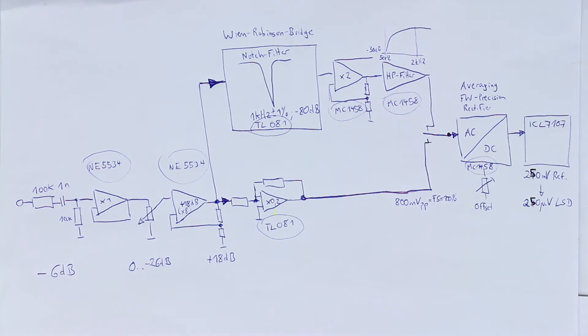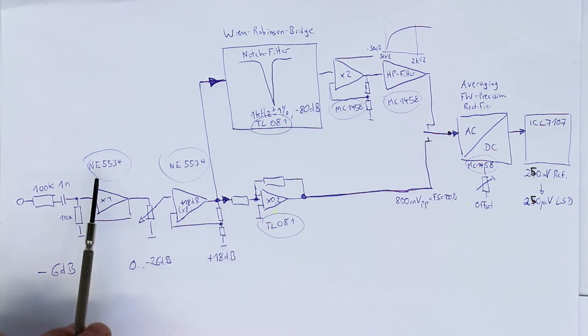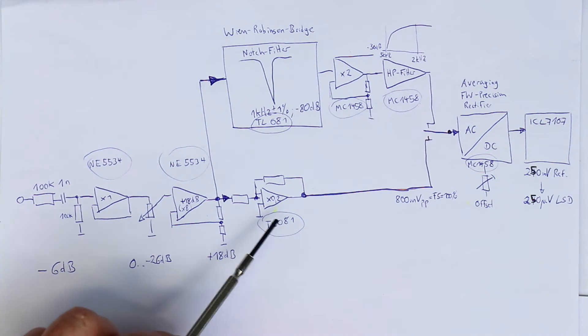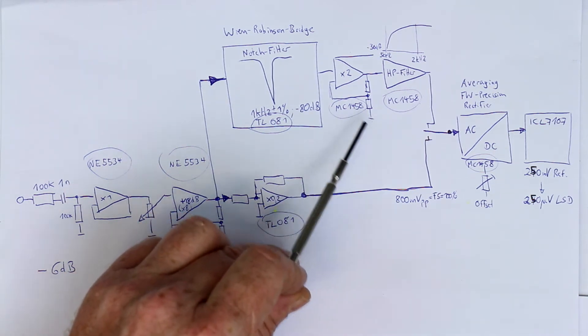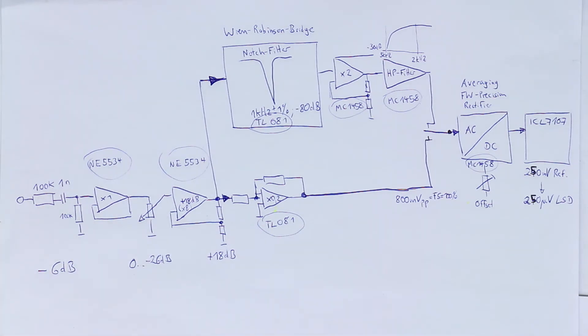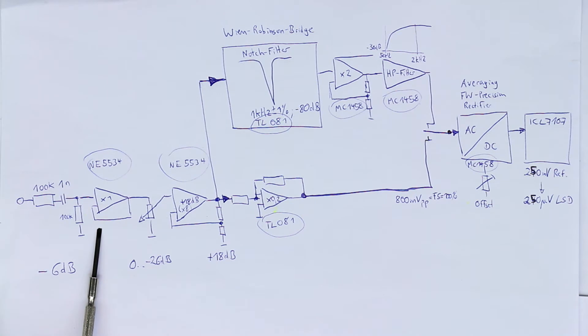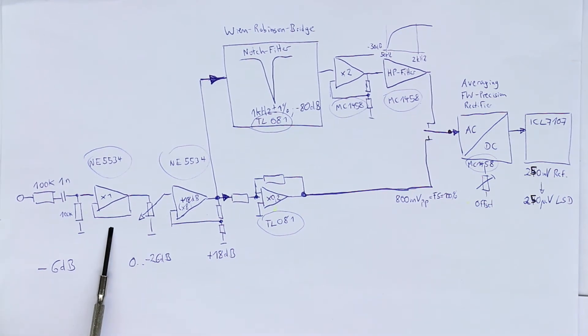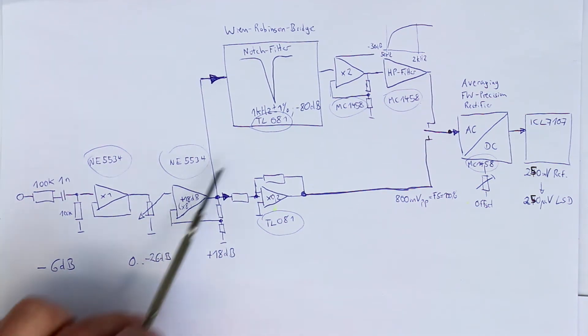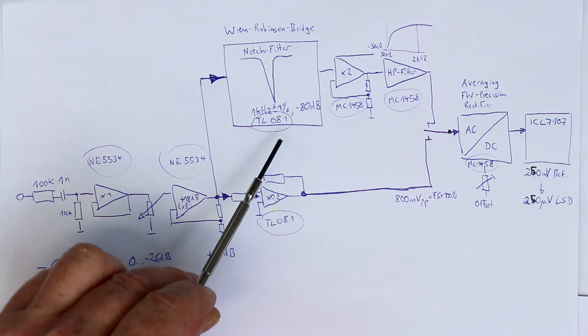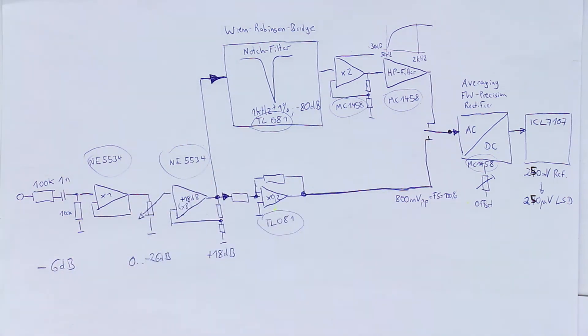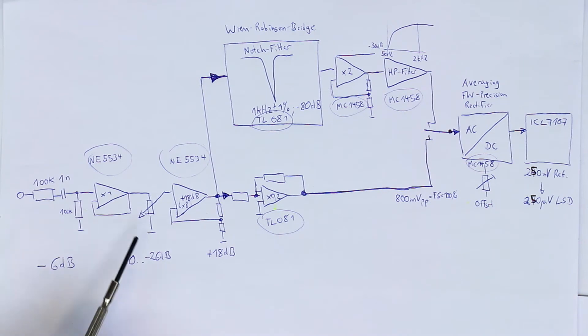As you can see, I've already written down the op-amps they have used here. It's four different types in all: the NE5534, the TL081, the MC1458. We'll talk about the choice of the right op-amp and analyze if the op-amps the original designers chose for the individual building blocks are really optimum.